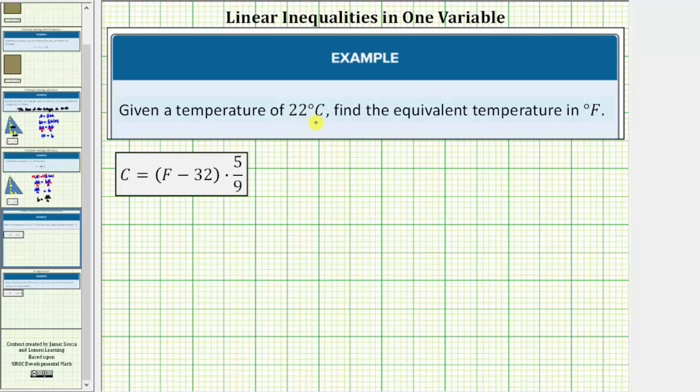Given a temperature of 22 degrees Celsius, we're asked to find the equivalent temperature in Fahrenheit using the given formula.